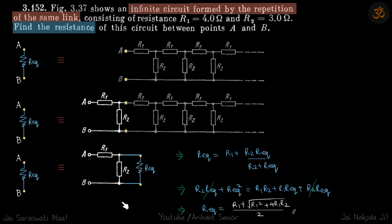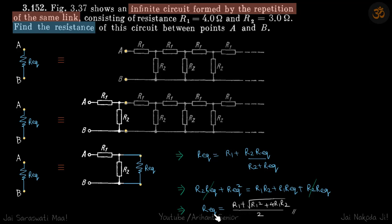Now this infinite circuit is converted into a finite one. R equivalent equals R1 plus R2 and R equivalent in parallel — that is R1 plus (R2 × R_eq) / (R2 + R_eq). We cross-multiply and simplify to get a quadratic. The second root will be negative, so we reject that, and the answer is only the positive root.